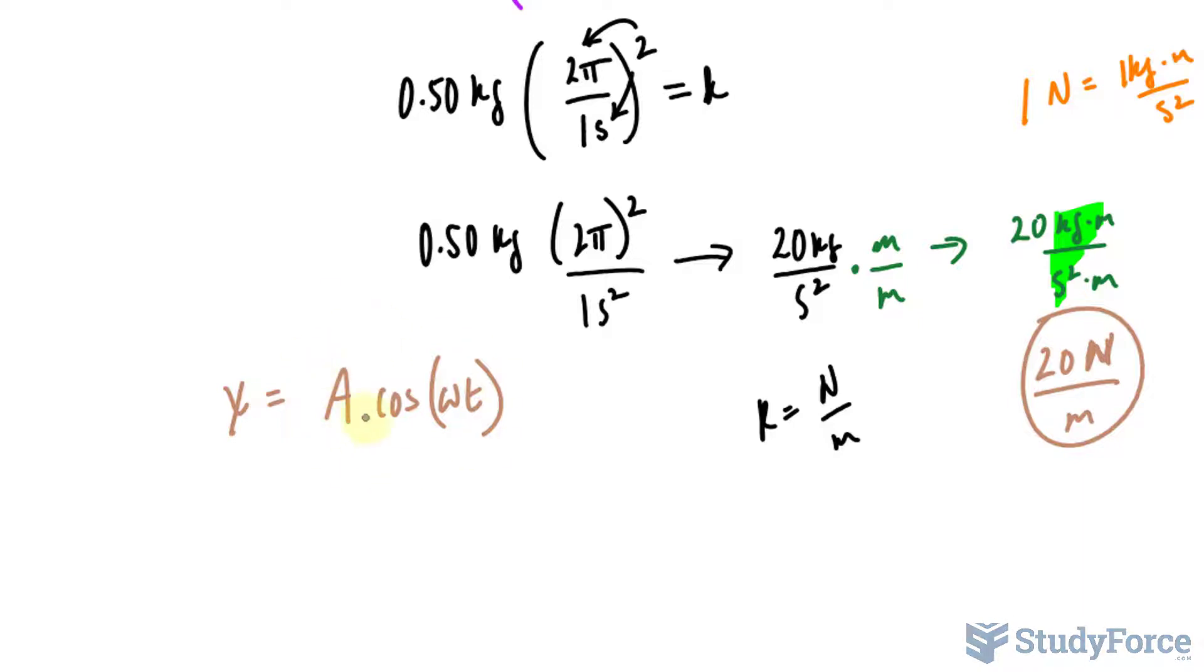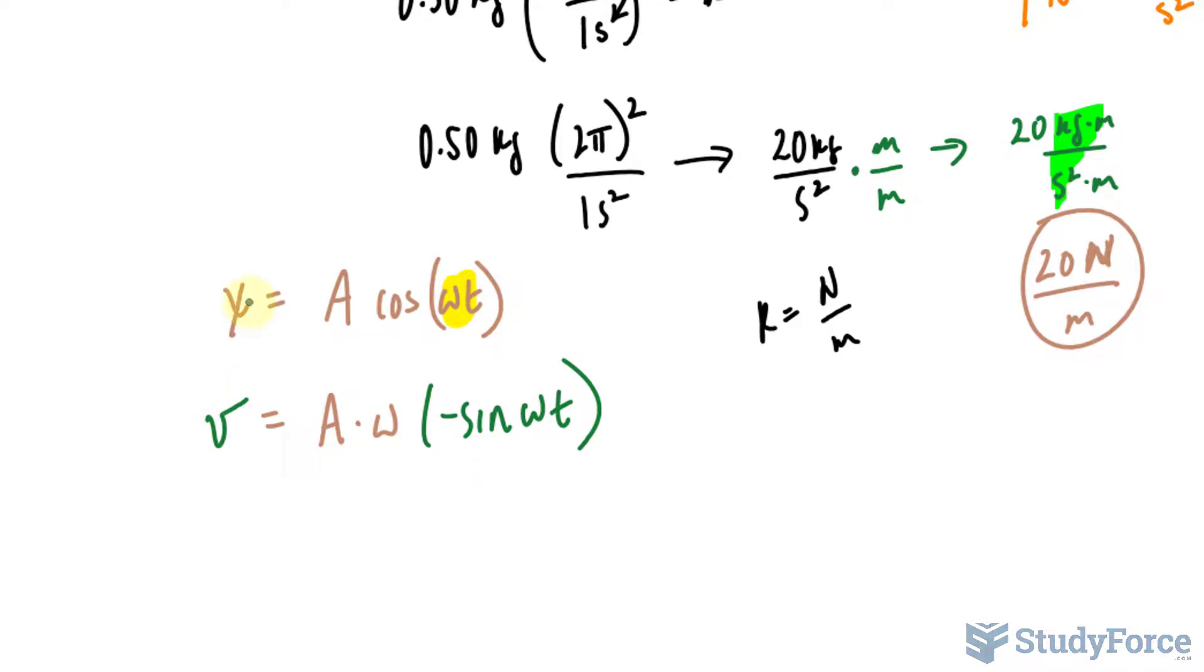Taking the derivative, we get A times omega, which is the derivative of this part of the function, where t is the independent variable and omega is the constant. The derivative of omega t is omega. The derivative of cosine is negative sine omega t. When we take the derivative of the displacement function, we get the velocity function.